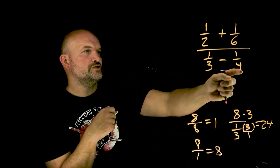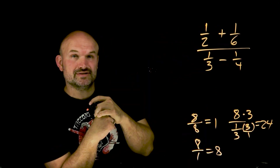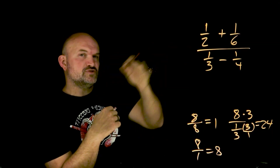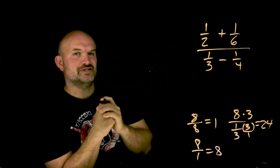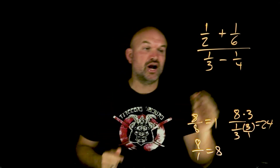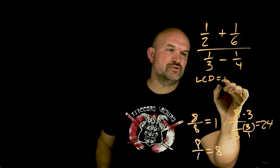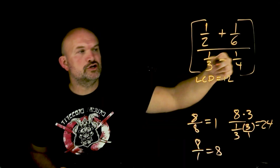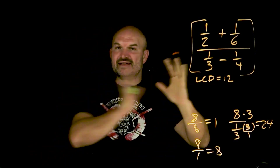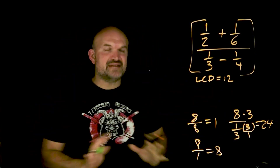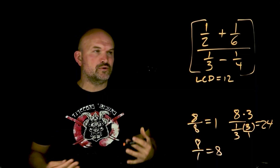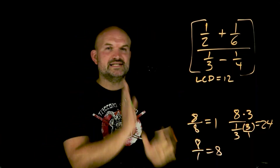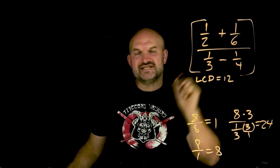What I have here is 1, 2, 3, 4 different denominators. What I want to do is be able to achieve a number that all of those four denominators evenly divide into. That special number is going to be our LCD, which in this case is going to equal 12. So could you add your fractions in the numerator, add your fractions in the denominator, and then divide them? Absolutely. But if I'm just doing a quick review and I want to give you the quickest, fastest, easiest way to simplify complex fractions, this is the way I like to do it.